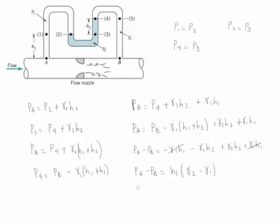Or if you're looking for it, you could also say PB minus PA is going to be H2 and then the opposite, gamma 1 minus gamma 2. Notice that in this problem we are actually looking for PA minus PB. So this is the equation that we are going to use.